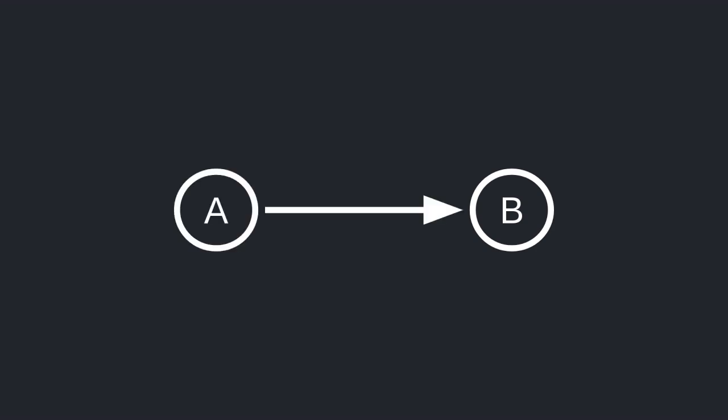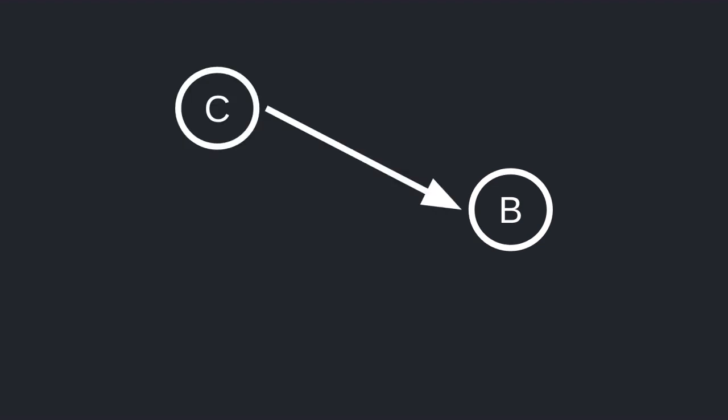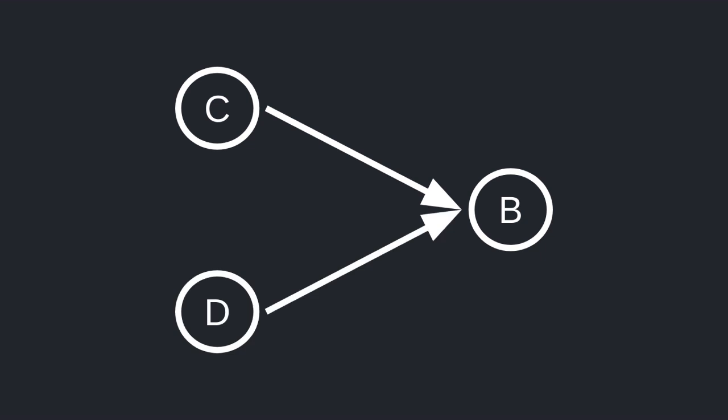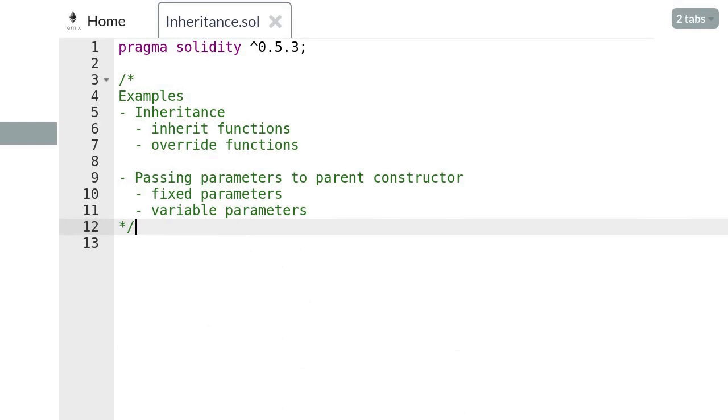Let's go over inheritance in Solidity. In this video we'll cover the case where a contract inherits a single parent contract. For example, contract B inherits a parent contract A. We're not going to deal with the case where contract B inherits from two parents, contract C and contract D. Multiple inheritance will be the topic of the next video. So let's see some examples in Remix.